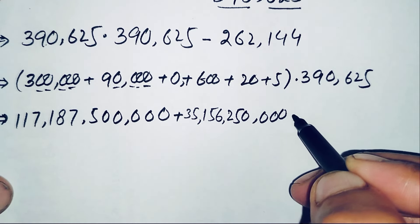Multiplying 390,625 by 20: 2×5=10 (write 0, carry 1), 2×2=4 plus 1 is 5, 2×6=12 (write 2, carry 1), 2×0=0 plus 1 is 1, 2×9=18 (write 8, carry 1), 2×3=6 plus 1 is 7. This gives 7,812,500. Then multiplying 390,625 by 5: 5×5=25 (write 5, carry 2), 5×2=12 (write 2, carry 1), 5×6=31 (write 1, carry 3), 5×0=3, 5×9=45 plus 4=49 (write 9, carry 4), 5×3=15 plus 4=19. This gives 1,953,125.